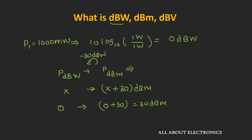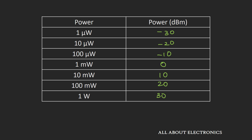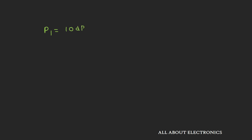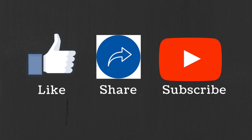Here is a list of some powers and their corresponding values in dBm format. Before ending, here is a question: if power P1 = 10 dBm and power P2 = 5 dBm, what is the total power P = P1 + P2? Do let me know in the comments. I hope this video clarified the different decibel scales used in electronics and communication systems. If you have questions or suggestions, comment below. If you liked this video, hit like and subscribe for more.